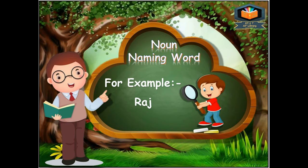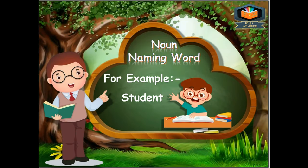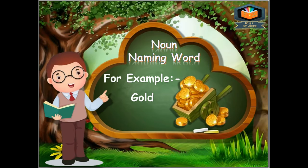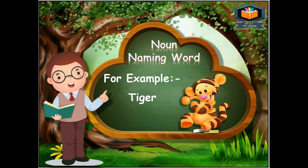For example: Raj — Raj is the name of a boy, so this is a noun. Student is also a noun. Gold is the name of a thing, the name of a metal, so this is also a noun. Tiger is the name of an animal, so this is also a noun.